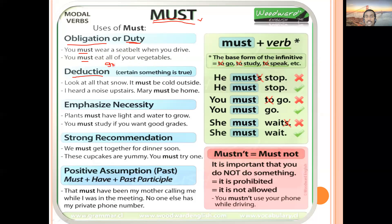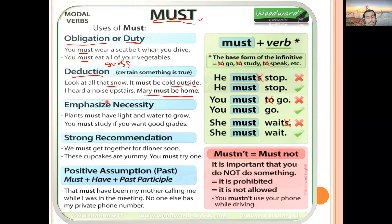The next use of 'must' is deduction — a guess that is usually true, 99% of the time. Example: 'Look at all that snow — it must be cold outside.' You are deducing from the snow that it is cold. Another: 'I heard a noise upstairs — Mary must be at home.' From the noise, you conclude that Mary is home. This is deduction with 'must'.